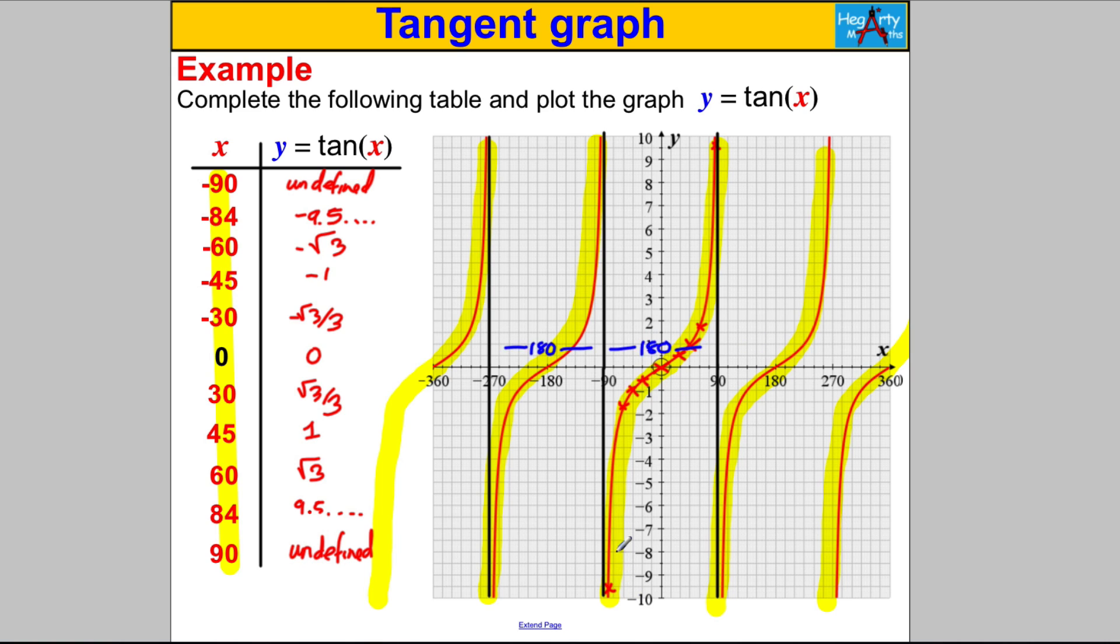A couple of things to point out: this graph actually has asymptotes, a bit like the reciprocal function we dealt with earlier. It has an asymptote x equals 90. If you type tan 90 in your calculator, it says undefined. It has an asymptote x equals -90. If you type that in your calculator, it is undefined. It has an asymptote at -270 and it also has an asymptote x equals 270.